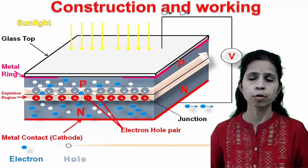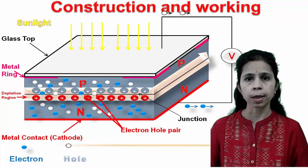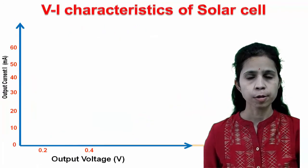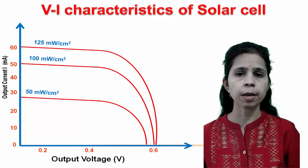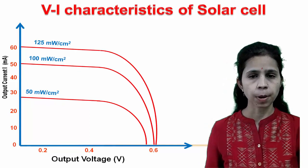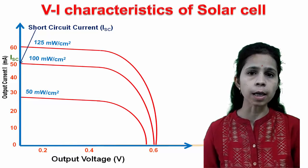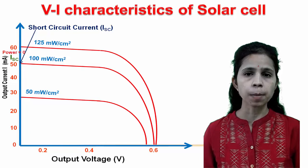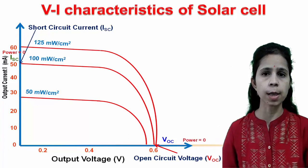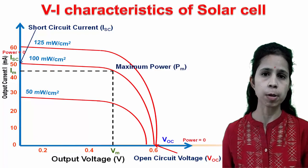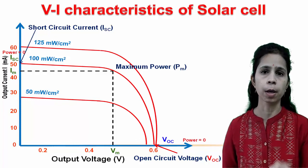Silicon and germanium are the most widely used materials for solar cells, but gallium arsenide, indium arsenide, and cadmium arsenide are also used. The VI characteristics of a solar cell for different illuminations are shown graphically. For an illumination of 100 mW/cm², if the cell is short-circuited, maximum current is 50 mA but voltage is zero, so power output is zero. For open circuit conditions, maximum voltage is 0.57 V but current is zero and power output is again zero. For maximum power output, the cell should be operated at the knee of the curve.